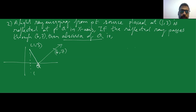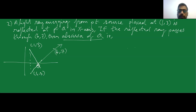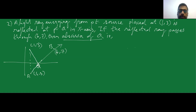I will find the image of the source point. The image of (1, 3) reflected across the x-axis is (1, −3). If I extend the reflected ray line, it will meet the point (1, −3). Let us call this point A and the other point (6, 7) as point B.